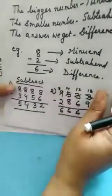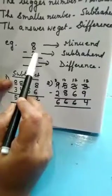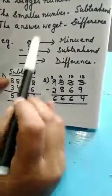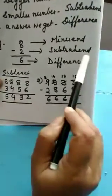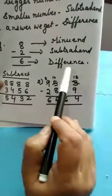For example, 8 minus 2, what comes? 6. Now, 8 is your minuend, 2 is your subtrahend and 6 is your difference.